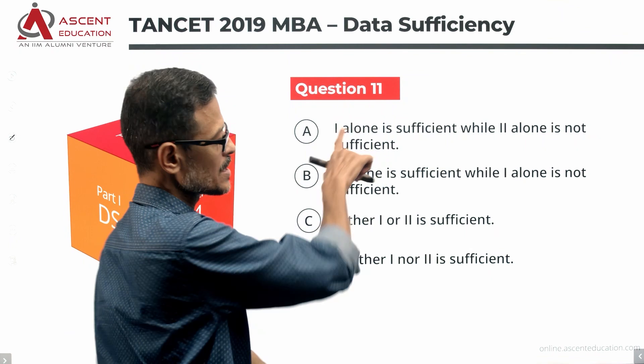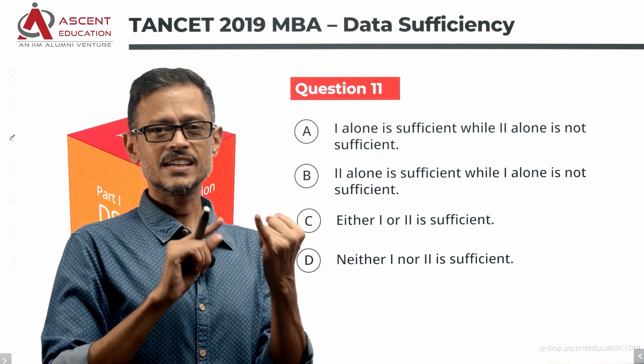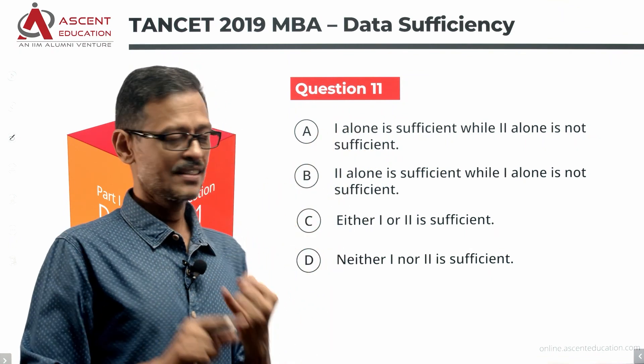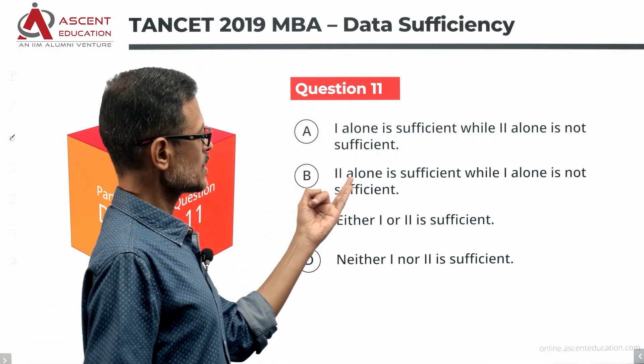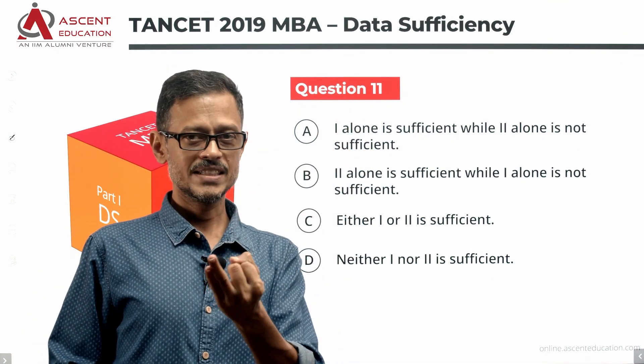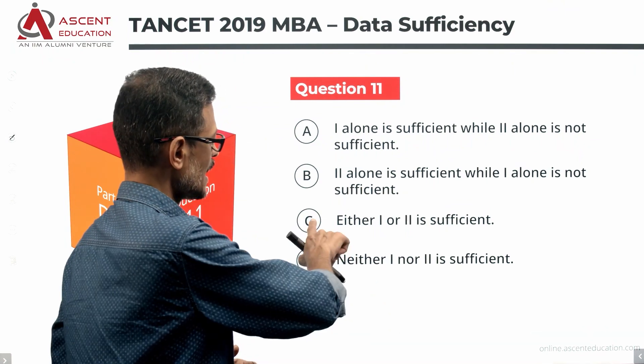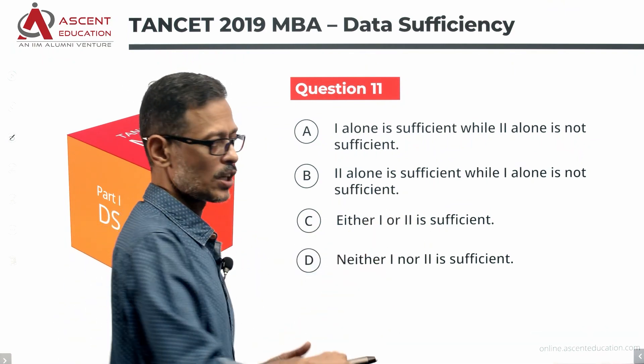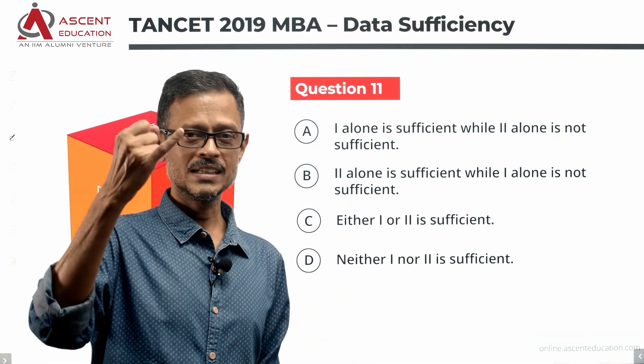Statement 1 alone is sufficient and 2 is not — A is the answer. Statement 2 alone is sufficient and 1 is not — B is the answer.